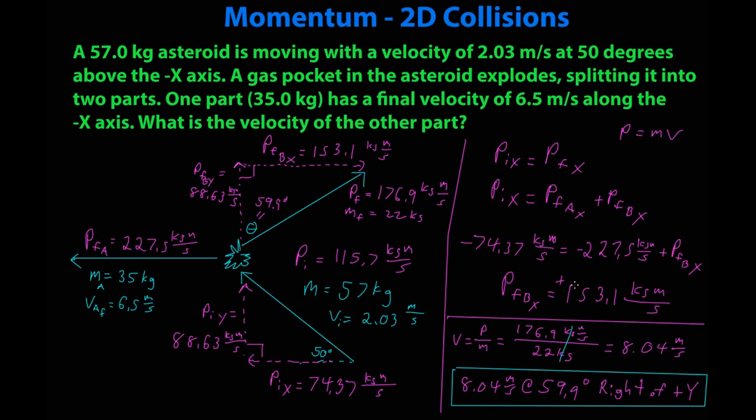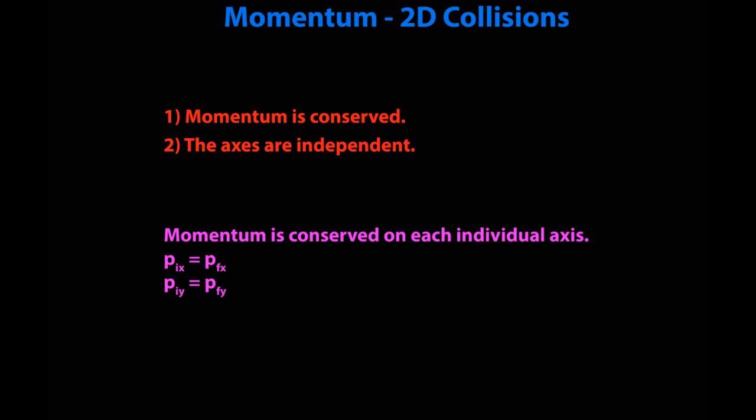So this is the technique. Drawing it, I believe, creates a very visual representation that is easy to keep track of. Even though looking at it finished now, it looks like a bit of a mess. However, if you recognize where the problem started, you can still follow through this pretty easily. But again, dealing with 2D collisions, momentum is conserved, the axes are independent, so momentum is conserved on each individual axis. This topic basically just combines momentum collisions and vector addition.